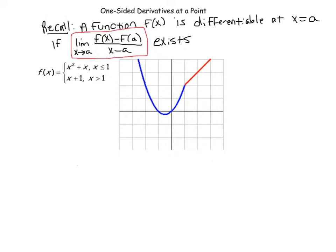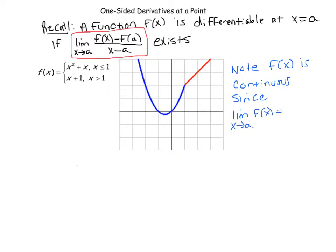Before we do that, let's note that this function is continuous. You need a function to be continuous in order for it to even have a shot at being differentiable. The definition of continuity is that the limit as x goes to a of f(x) has to equal f(a). Let's look at the limit as x goes to 1 of f(x) and see if that equals f(1). Well, f(1) is easy to evaluate — plugging into the top function gives us 1 squared plus 1, which is 2.